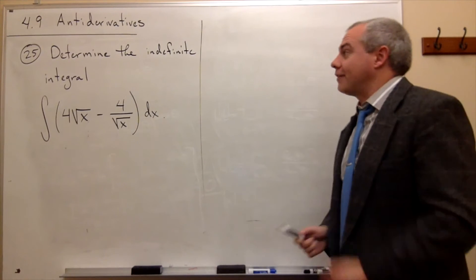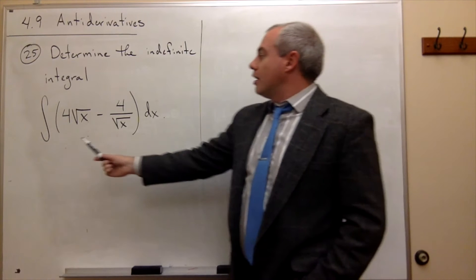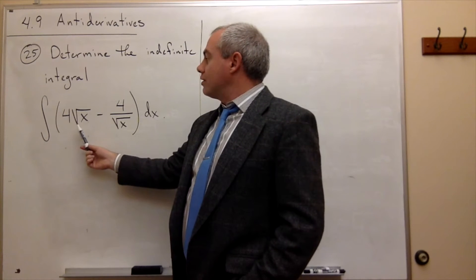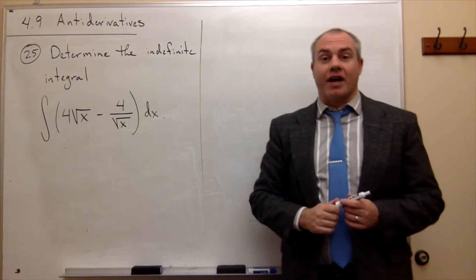In problem number 25, we'd like to determine the indefinite integral: the integral of 4 square roots of x minus 4 divided by the square root of x dx.